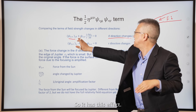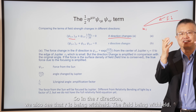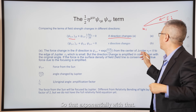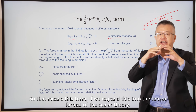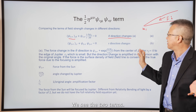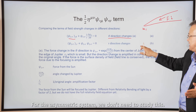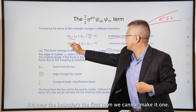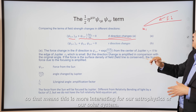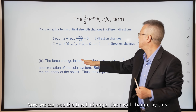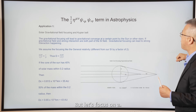In the r direction we also see the field being held, exponentially. If we solve this and expand into the tensor format of the scalar theory, we see two terms for the asymmetric system. This will be important only near the boundary, but near the boundary the first term complicates things. This is more interesting for astrophysics or our solar system. The b and r were changed by this term, but let's focus on some applications.